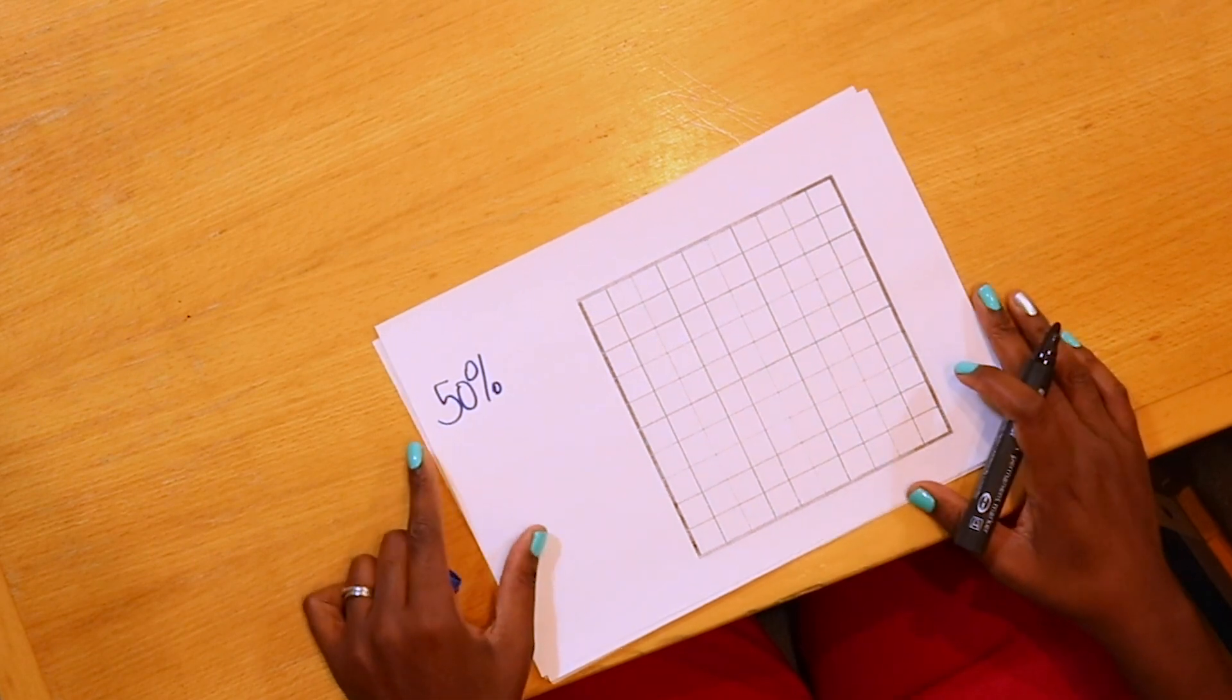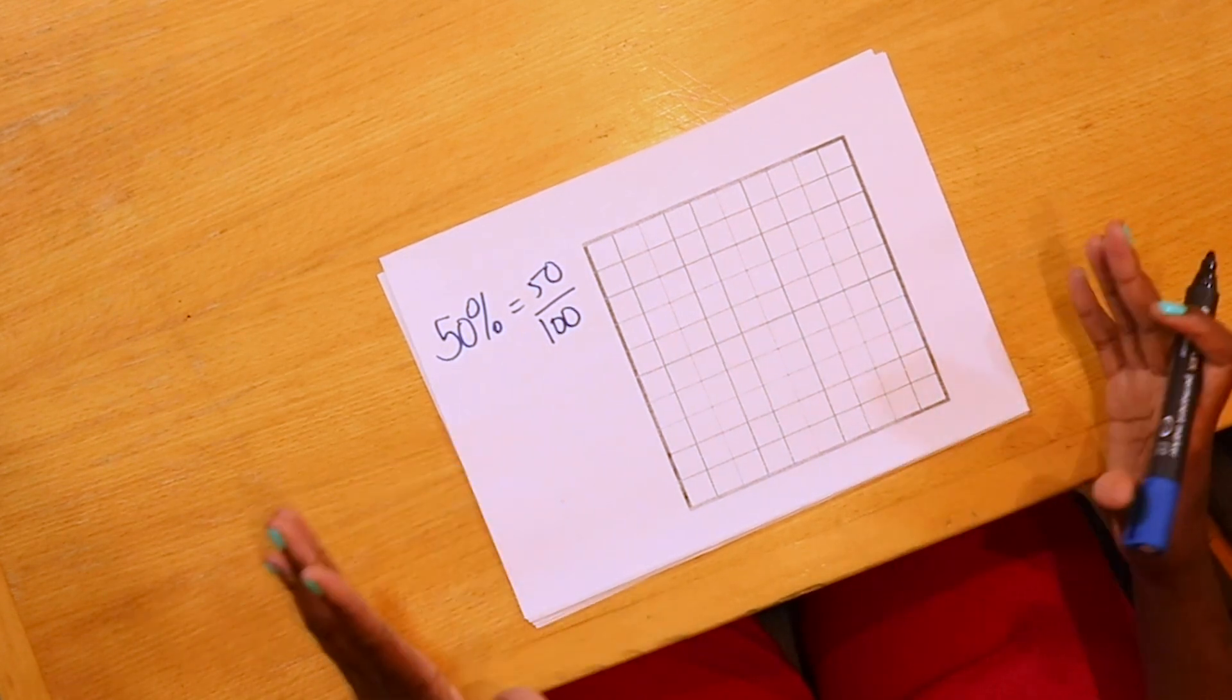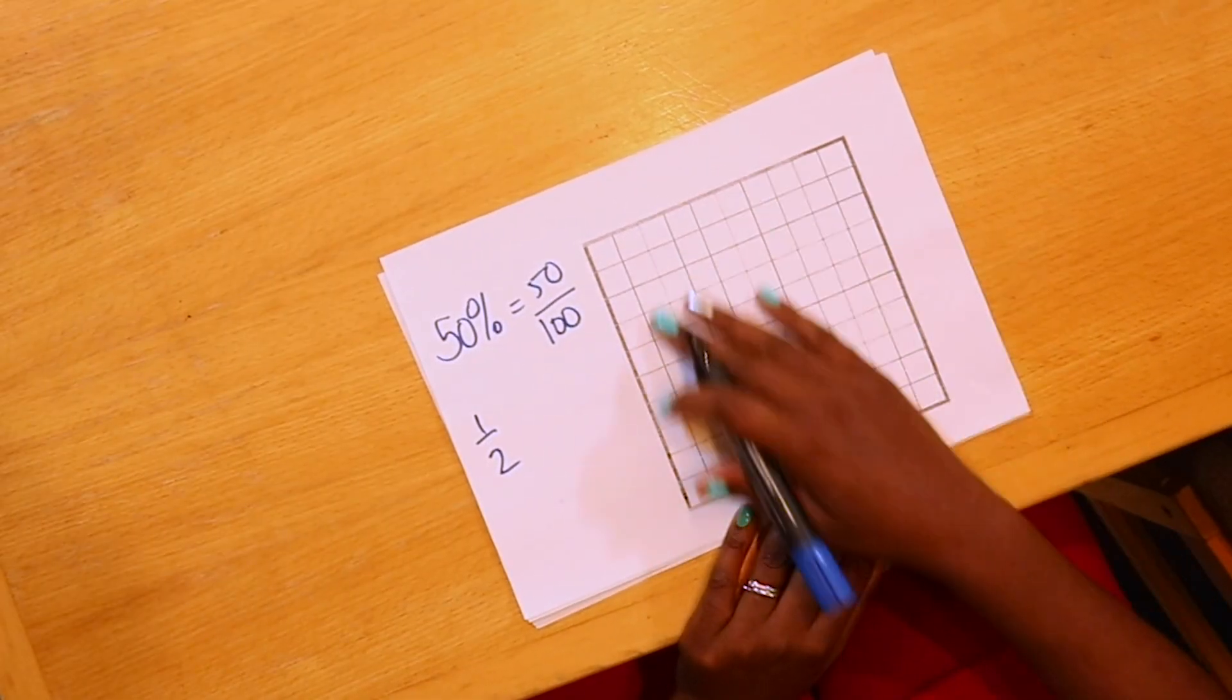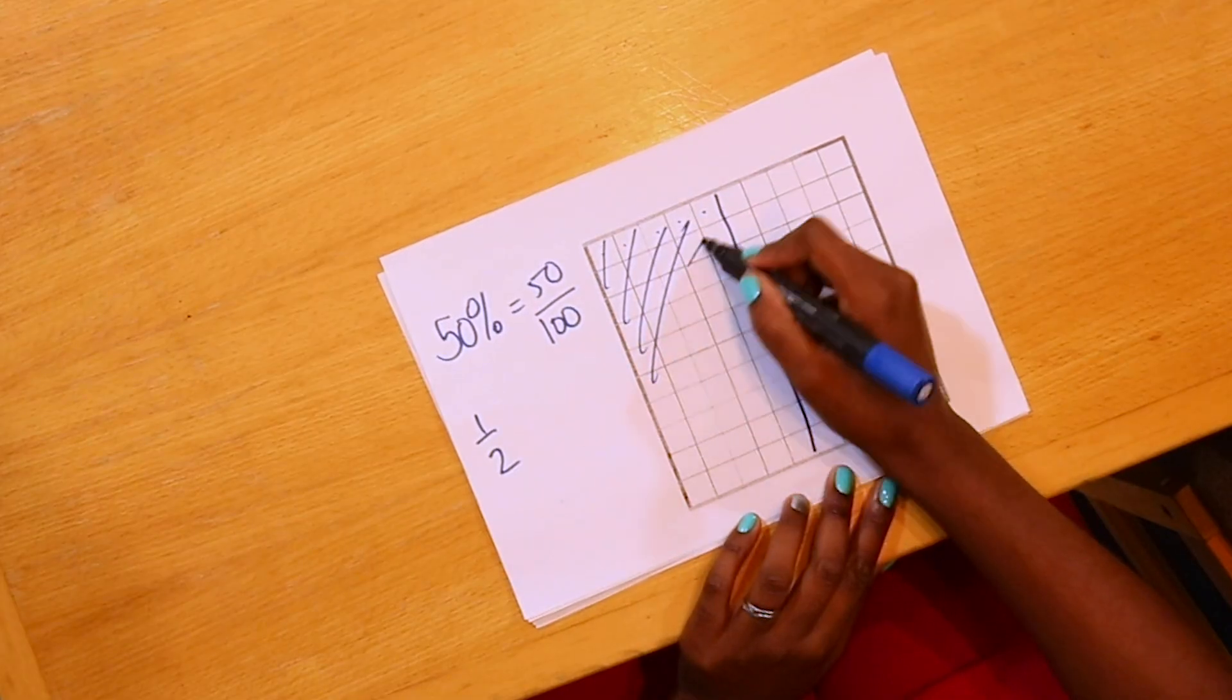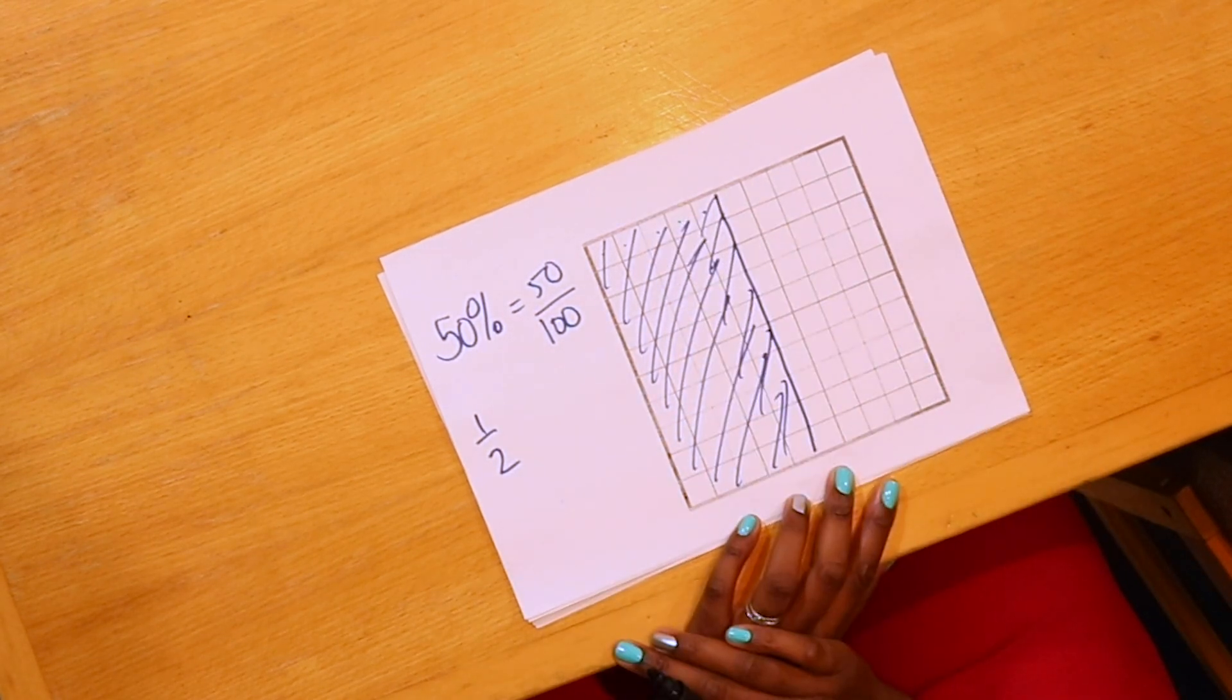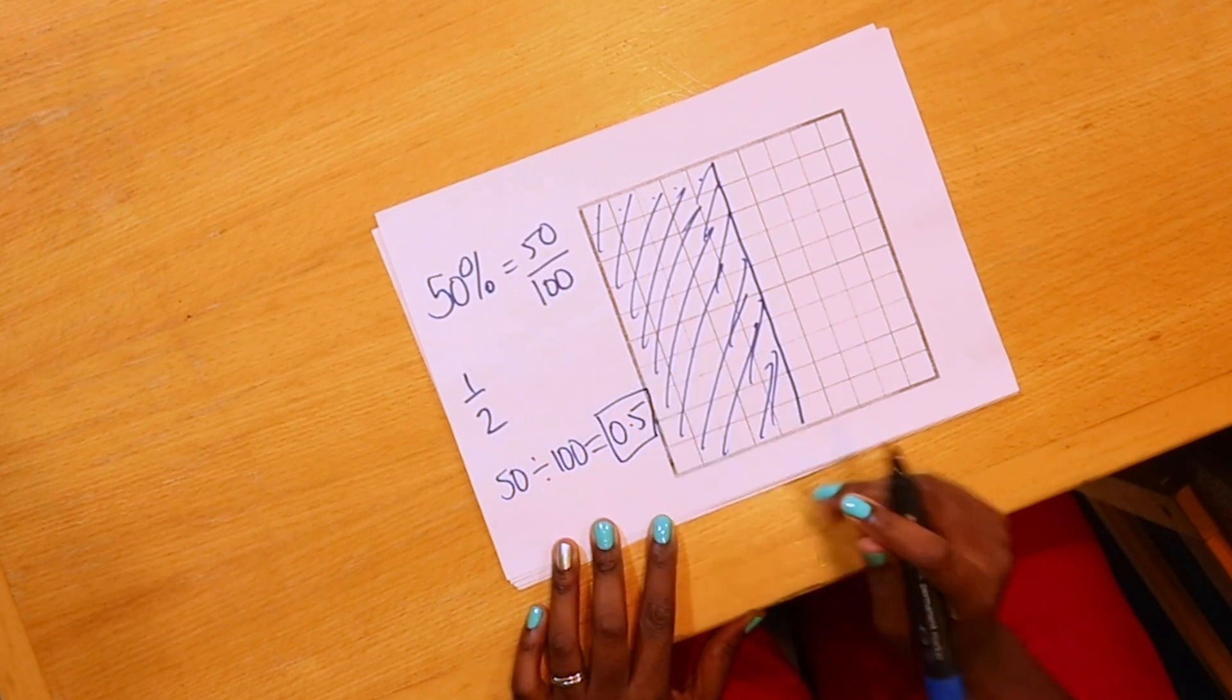There's a few percentages I think are important that everyone should feel confident with. One is 50%. How would you write 50% as a fraction? So it's 50 out of 100. Some people also know 50% is equivalent to a simpler fraction - one half. So we think our whole is 100%, and we want 50 of those 100. The columns down are 10, so we're at 1, 2, 3, 4, 5. That's effectively 50 squares. And if we colour in 50 squares, that is half of our whole. But we can also convert this to a decimal by doing 50 divided by 100, which is the same as 0.5.